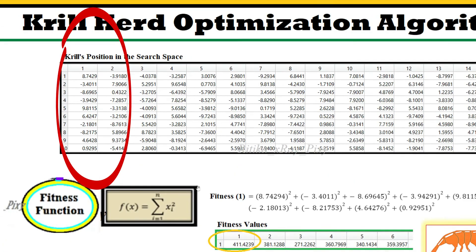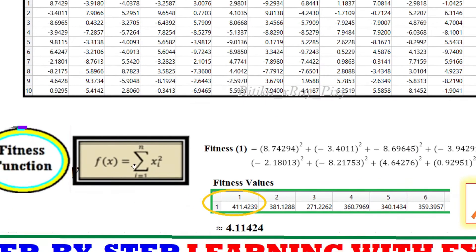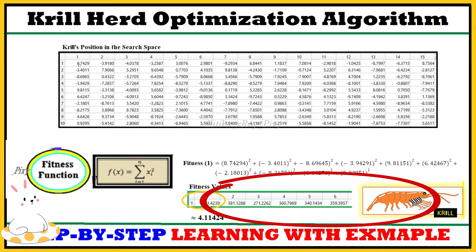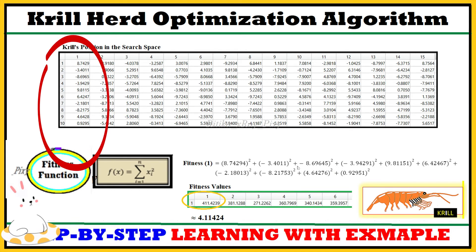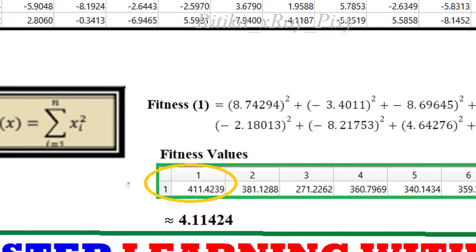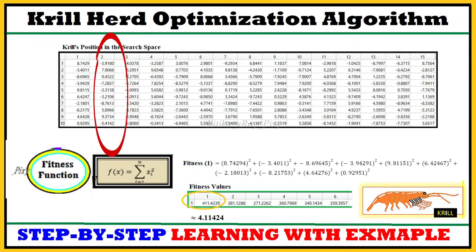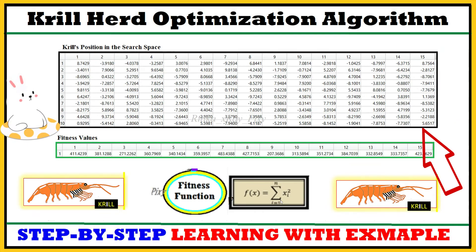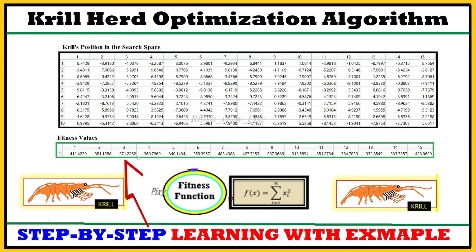We will put all the values into this function and obtain the result. For example, the first krill gives a fitness value of 4.11424. One by one, we calculate fitness for the second, third, fourth, and up to the fifteenth krill in the same way, and you can see the complete fitness values for each krill in the search space.